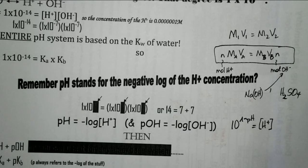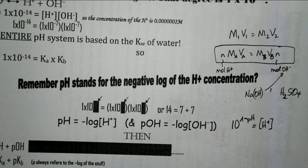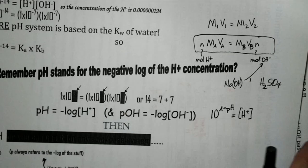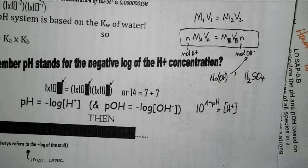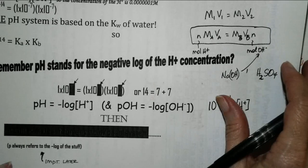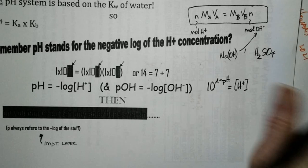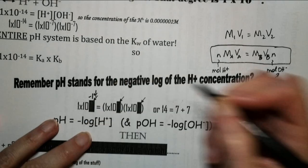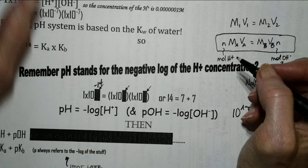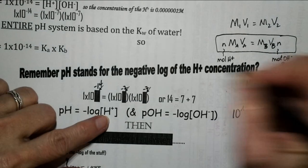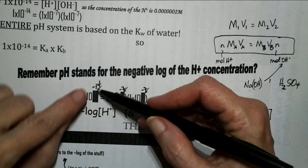Remember that pH stands for the negative log of the hydrogen ion concentration. The colors in the notes went out, so write this in: this should say 10⁻¹⁴, this should be 10⁻⁷, and this should be 10⁻⁷. If you take the negative log of 10⁻¹⁴, it's 14. Negative log of 10⁻⁷ is 7, and the same for the other — 7 plus 7.